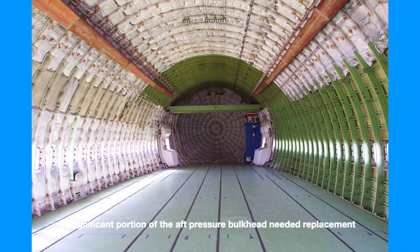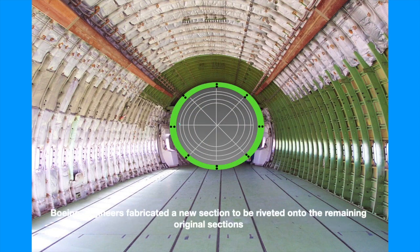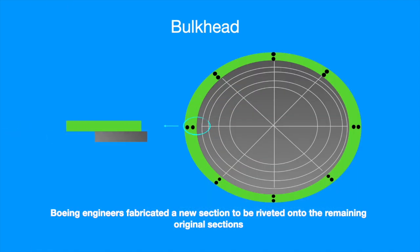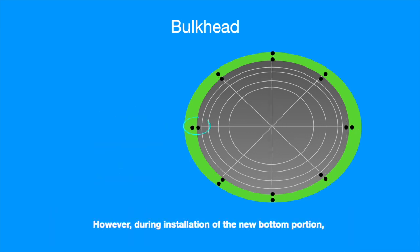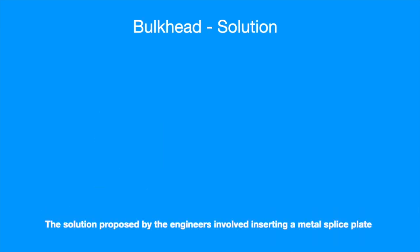A significant portion of the air pressure bulkhead needed replacement. Boeing engineers fabricated a new section to be riveted onto the remaining original sections. However, during installation of the new bottom portion, they discovered that the joint overlap was inadequate for the installation of two rows of rivets.